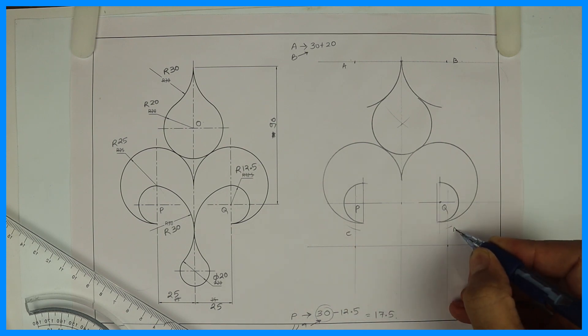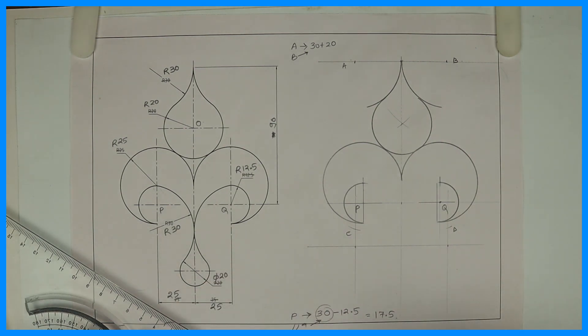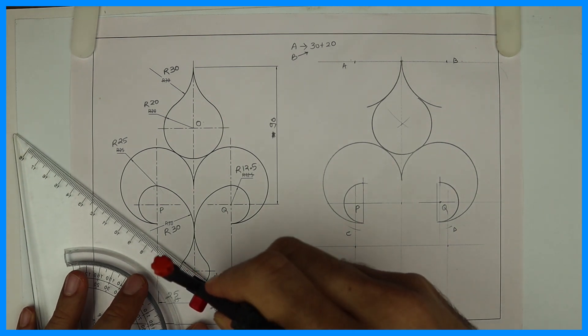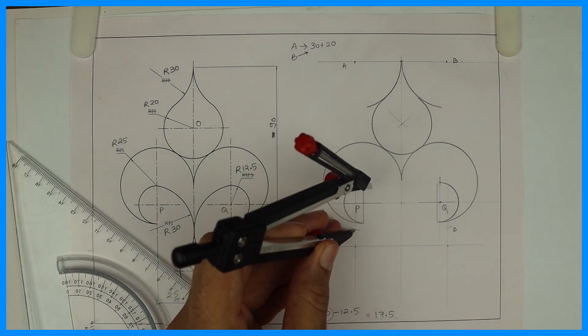Now from point C cut radius 13, same with point D. So we'll get those two arcs.